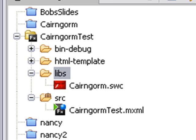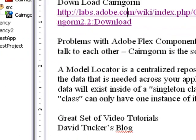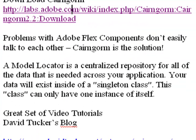I love it when Adobe makes things so easy. You may be asking why I'm interested in Cairngorm. I've been looking at two technologies: Ruby on Rails and Cairngorm. One problem with Flex is that components don't easily talk to each other. As your application grows, you need a way of centralizing all the data — what's called DRY in Ruby on Rails, meaning the data only occurs once. We're going to use a model locator: a centralized repository for all the data needed across your application.